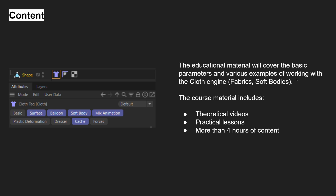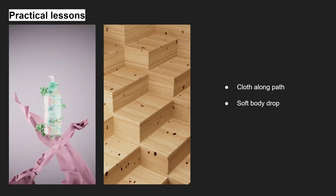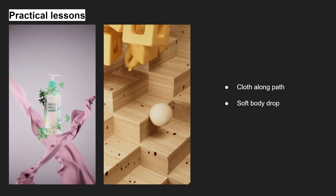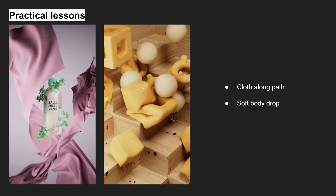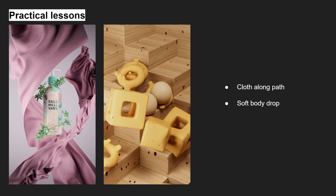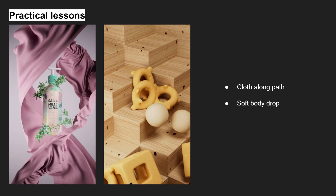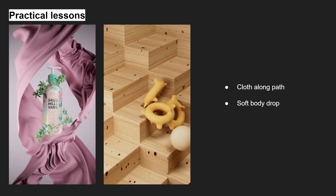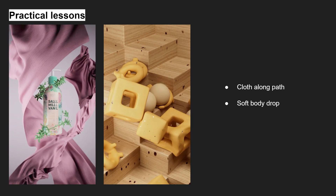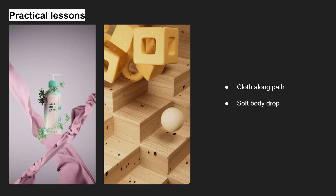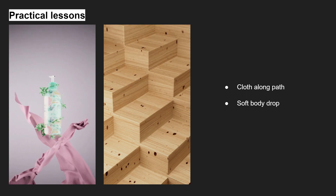In Cinema 4D, cloth simulation has become more powerful with the latest upgrades. By combining keyframe animation with simulation, it is now possible to create cloth along a path. This allows for more precise control of the cloth's movement and adds a new level of realism to animation.